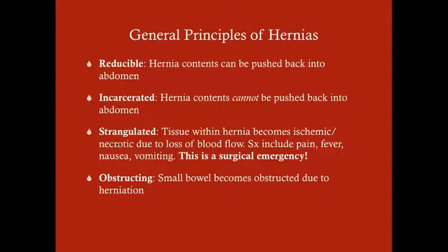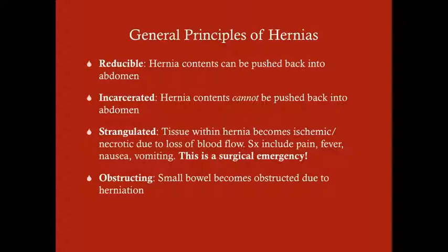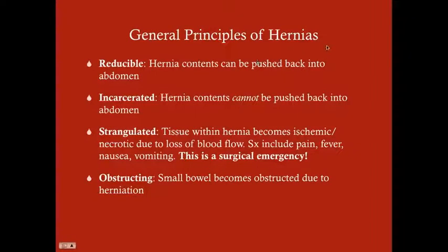Strangulation causes generalized signs of peritoneal infection — pain, fever, nausea, vomiting, and a color change in the hernia. All strangulated hernias are incarcerated, and you won't be able to manipulate the hernia back into the abdominal cavity. An obstructing hernia is usually also an incarcerated hernia but can also be reducible. This is where small bowel, usually what's in the hernia sac, becomes obstructed because of the kink that forms at the angle of the hernia sac, causing a small bowel obstruction.